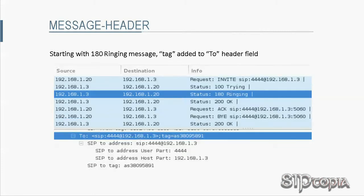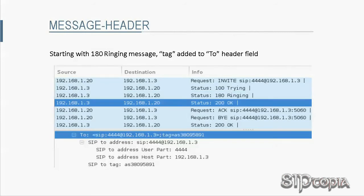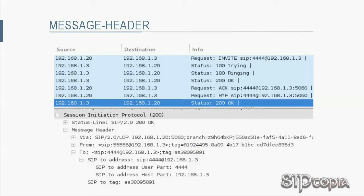Starting with the 180 Ringing message, we see the tag added to the To header fields. This makes sense because 180 Ringing means the other end has received our INVITE message — the other end knows of us, and thus we are in a dialogue. The remaining To header fields will contain a tag, all the way down to the last 200 OK that signifies the BYE message was successful and the call has been terminated.